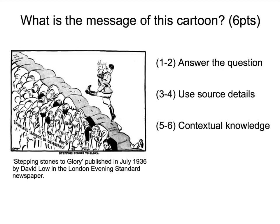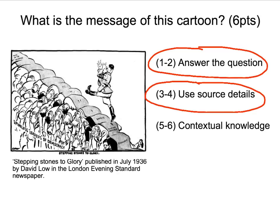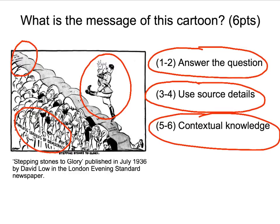By now you'll be increasingly familiar with the mark scheme. If you directly answer the question without backing it up, you'll get one or two marks out of six. You really need to use source details to back up your points — understanding symbols, writing, and key aspects of the cartoon. To push for five or six marks, you need contextual knowledge of what was going on at the time, and the key detail of July 1936 is essential for that.